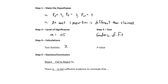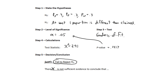The test statistic was chi-square equals 3.91 and the p-value was 0.1417. That is not less than the level of significance 0.05, so we fail to reject the null hypothesis. There is not sufficient evidence to conclude that at least one proportion is different than claimed — we were not able to prove that one of these percentages was incorrect.